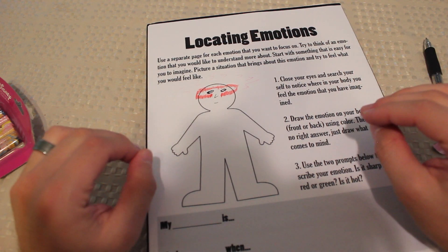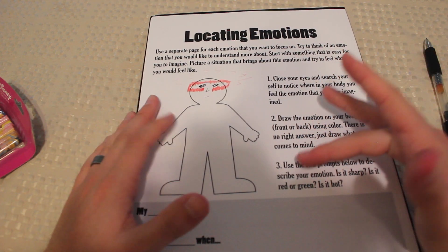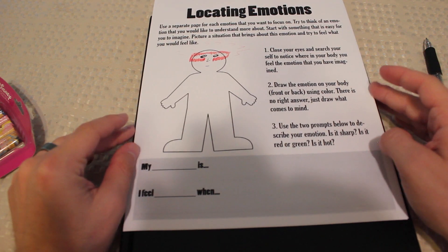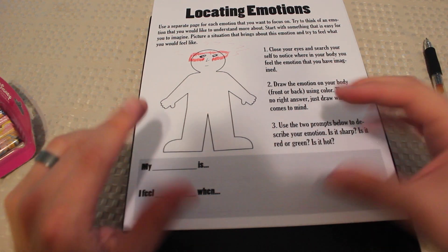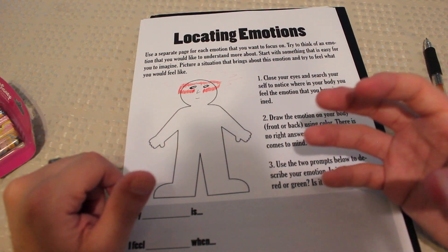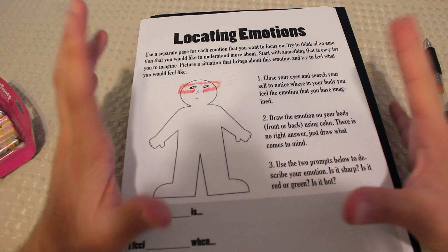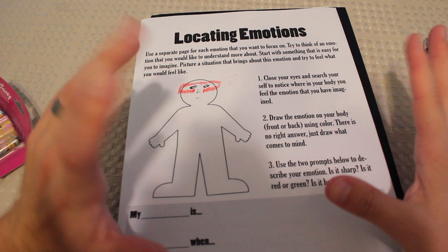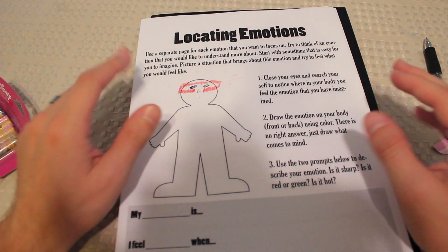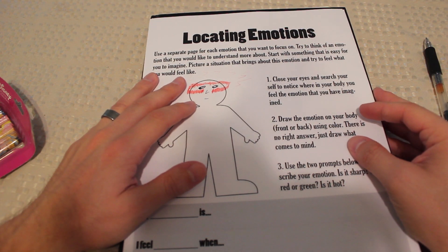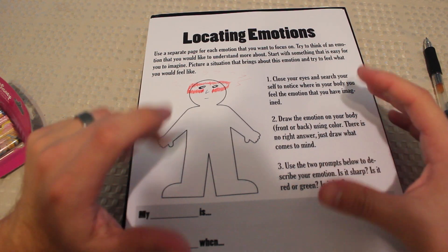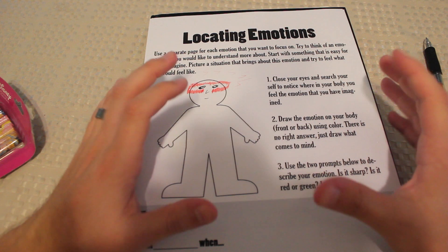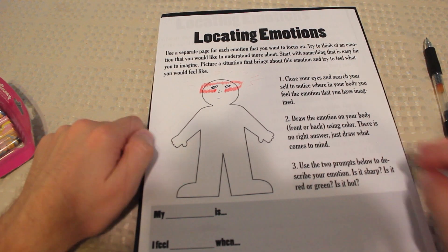So step two is to draw the emotion on your body, front or back, so this could be the front or the back of you, using color. There's no right answer, just draw what comes to mind. So I'm going to do that with these nice, pretty Disney princess colored pencils, because these are what I found on my wife's desk. I don't know if we have any other colored pencils. So give me a second to open these up. Okay, so I see this red one, and I'm just going to go for it.